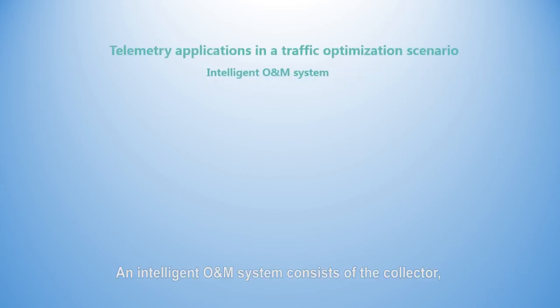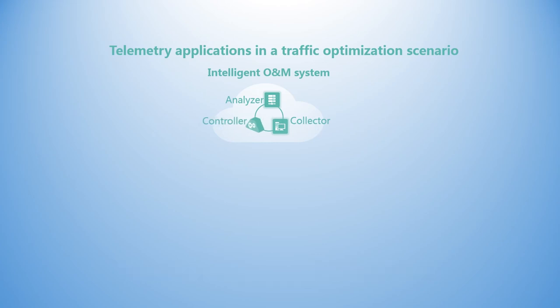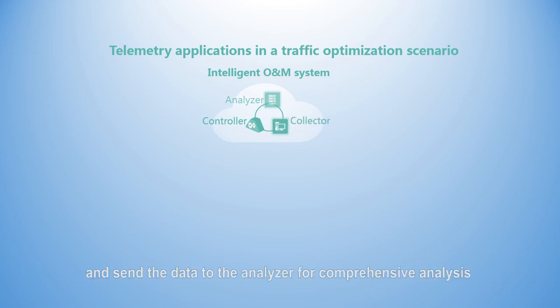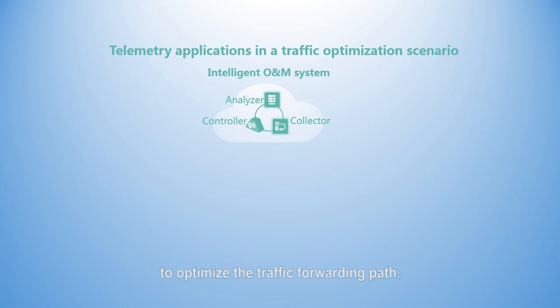An intelligent ONM system consists of the collector, analyzer, and controller. If a traffic forwarding path needs to be optimized, telemetry is used to collect device data and send it to the analyzer for comprehensive analysis and decision making. The analyzer sends the decision result to the collector, and the collector then adjusts device configurations to optimize the traffic forwarding path.